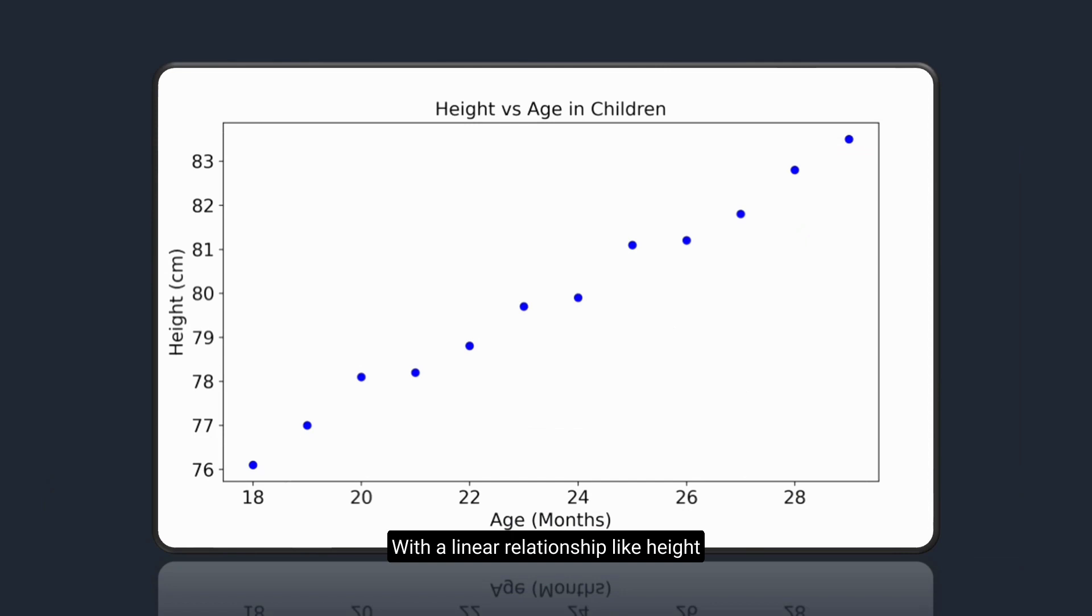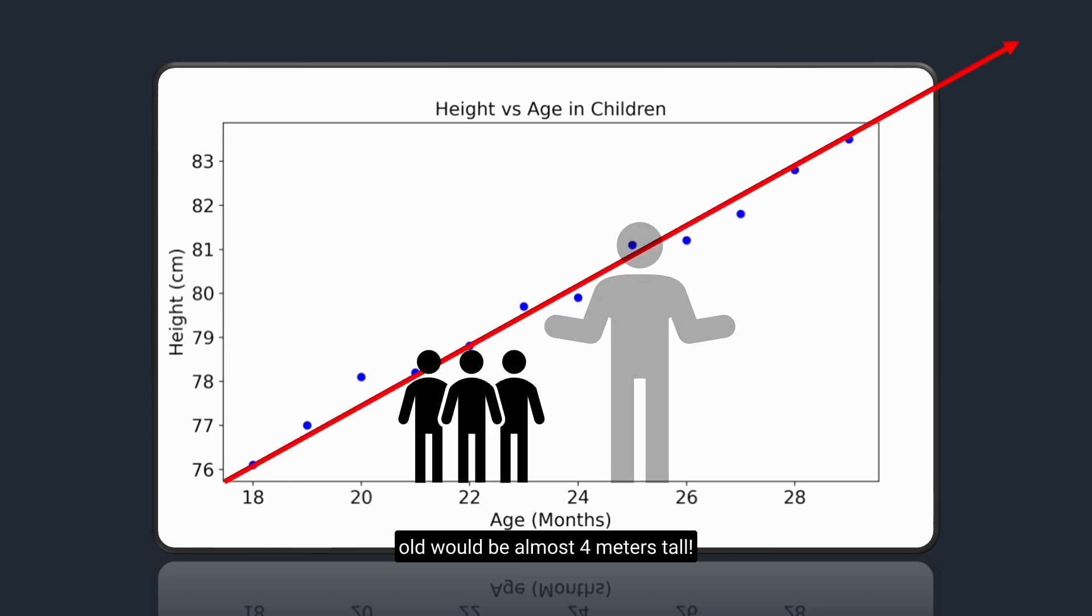With a linear relationship, like height versus age in young children, you wouldn't expect the line to continue indefinitely since, for example, a 40-year-old would be almost 4 meters tall.